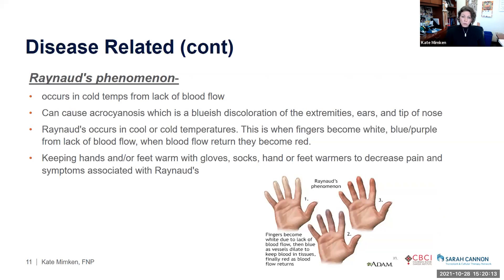Raynaud's phenomenon occurs in cold temperatures and involves a lack of blood flow, and can be associated with cryoglobulinemia. It can cause acrocyanosis — discoloration of the fingers, toes, ears, and tip of the nose. The fingers typically become white and then turn a purplish-blue from lack of blood flow; when blood flow returns they become bright red, which can be incredibly painful. We recommend keeping hands and feet as warm as possible using gloves, socks, and hand or foot warmers.